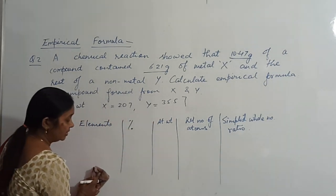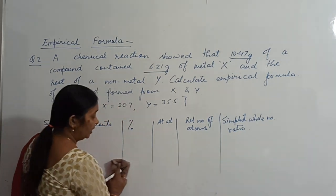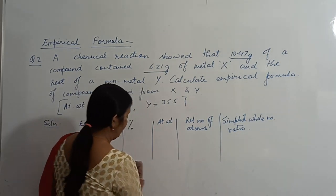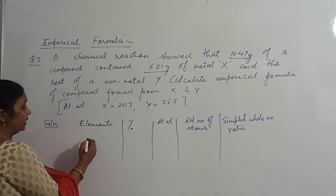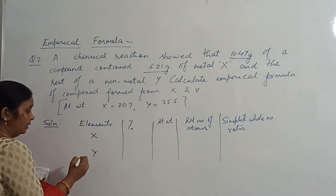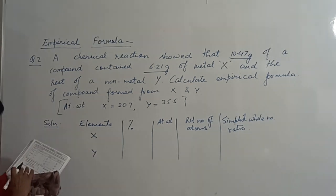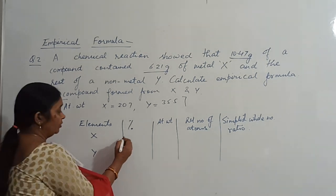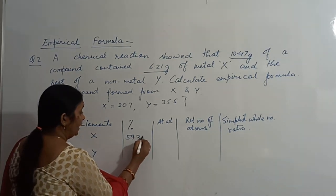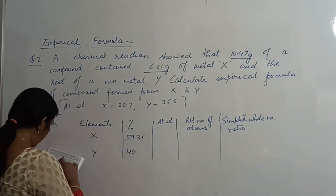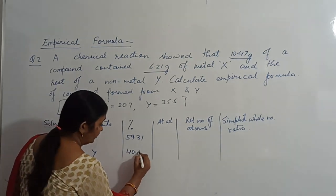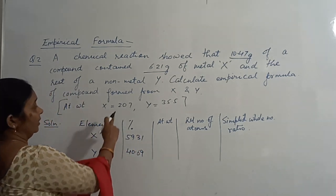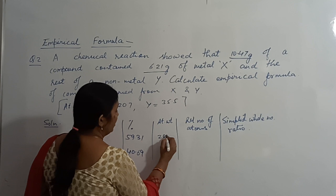Now we have two elements in this table. Let us make a small table for two elements. First element is X, second is Y. We have calculated the percentage of X as 59.31 and Y as 40.69. Atomic weights are given in the question: X is 207, Y is 35.5.